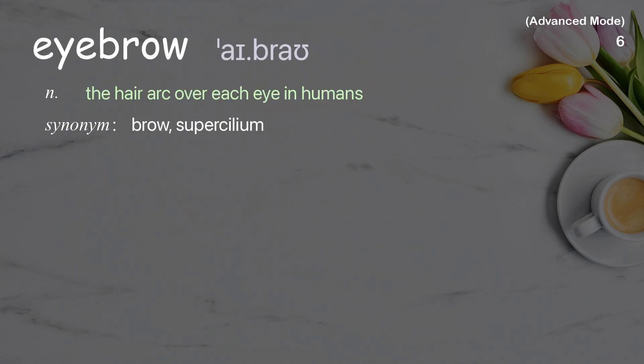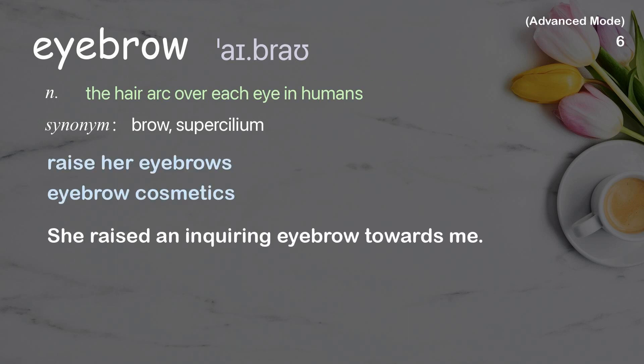Eyebrow. The hair arc over each eye in humans. Examples: raise her eyebrows, eyebrow cosmetics. She raised an inquiring eyebrow towards me.